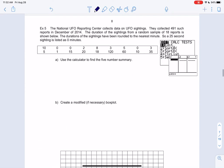We're going to make one more box plot. To save some time let's find the five number summary on the calculator. We're going to look at the National UFO Reporting Center collects data on UFO sightings. They had 491 reports but we're going to do a random sample of 18. The durations of sightings have been rounded to the nearest minute. So 25 seconds would be rounded down to zero. In case we don't remember how to use the calculator we're going to do that one var stat again.